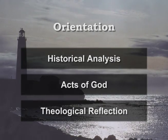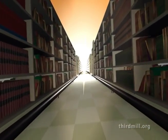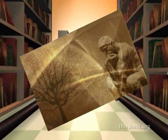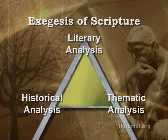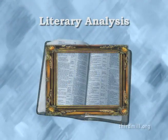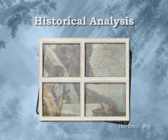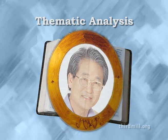Biblical theology is drawn from the historical analysis of Scripture. To understand what we mean by historical analysis, we need to review some broad perspectives introduced in other series. The Holy Spirit has led the Church to pursue the exegesis of Scripture in three main ways — literary analysis, historical analysis, and thematic analysis. Literary analysis looks at the Scriptures as a picture, a literary portrait designed by human writers to influence readers. Historical analysis looks at Scripture as a window to history, exploring historical events lying behind the Bible. And thematic analysis looks at the Bible more as a mirror that reflects our interests and questions.